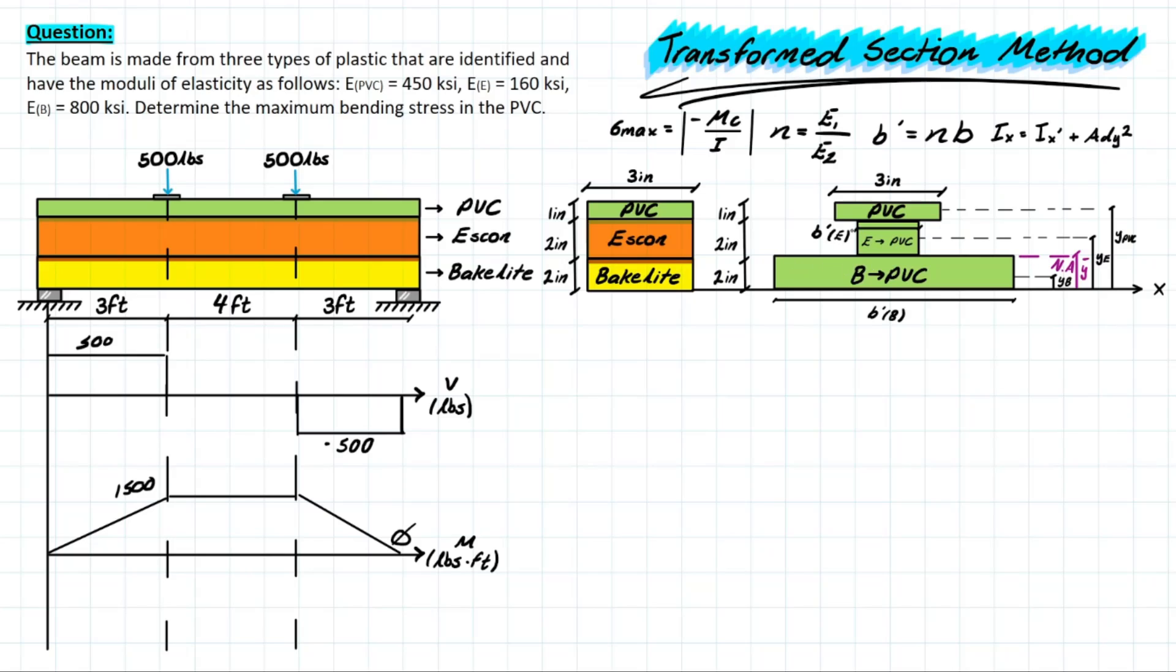The B value is changing for each of them. So we now have these B' values. All that means is that we are simply transforming the shape into its equivalent area based on the relationship for modulus of elasticity, which is our n, the modular ratio. And the first one we're going to do is for E, which is being transformed into PVC. And what that formula is going to look like is we have E for the Escon over the modulus of elasticity for the PVC, which is going to give us 160 over 450. And solving that, we are left with 0.356. Why does this make sense? This is so important to these problems.